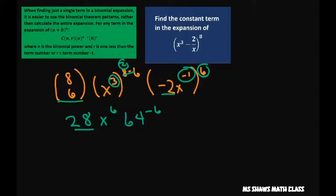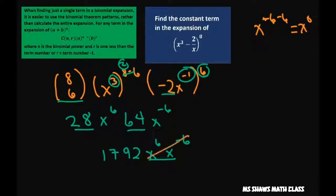So we get 28 times 64 is 1792. This is x to the 6th. Whoops, this would be x to the negative 6th. These two, when you add those up, that's going to be x to the 6 plus negative 6, which is x to the 0. So this is just x to the 0, which is our constant term. x to the 0 equals 1.